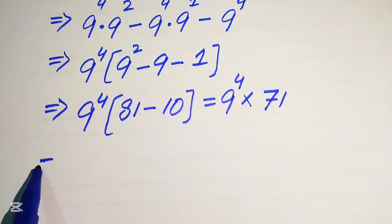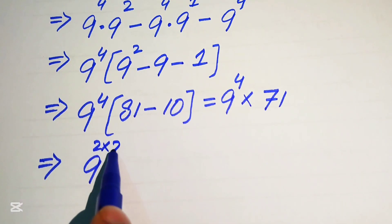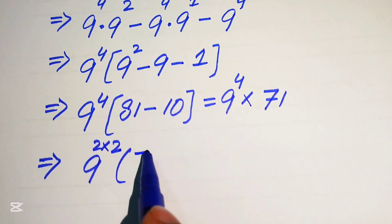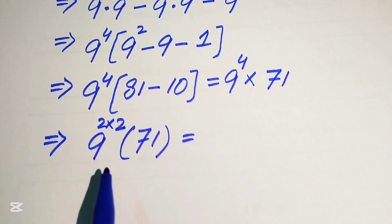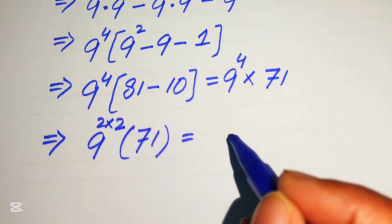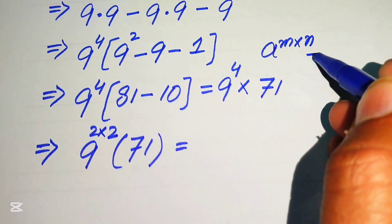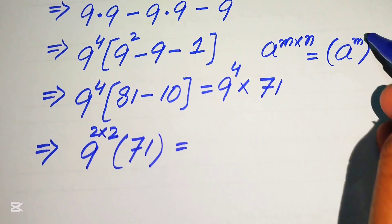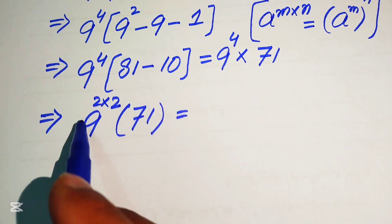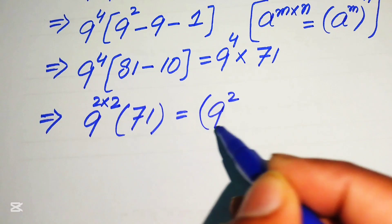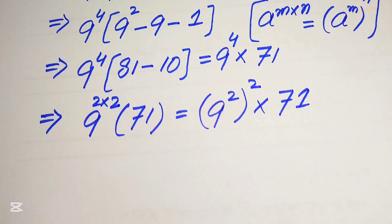Now we simplify 9 to the power of 4 by writing the 4 as 2 multiplied by 2, so we have 9 to the power of 2 times 2, multiplied by 71. We use the exponent law: a to the power of m times n equals a to the power of m, to the power of n. So we write 9 to the power of 2 times 2 as 9 to the power of 2, whole squared, multiplied by 71.